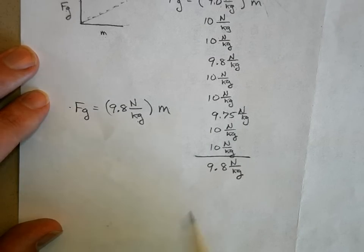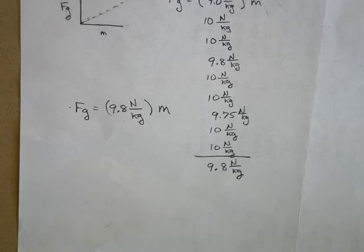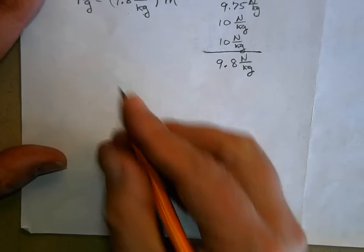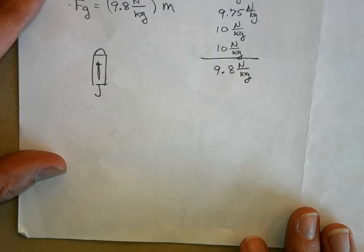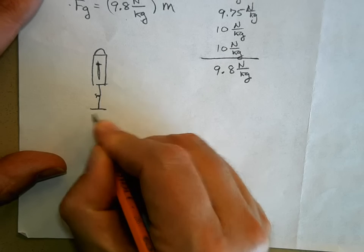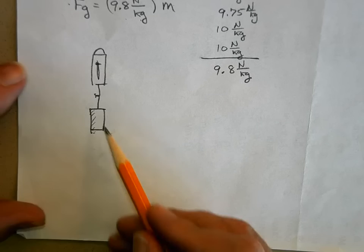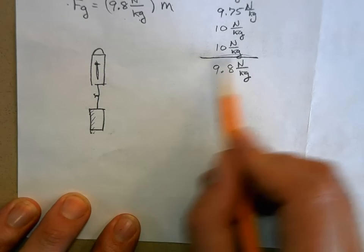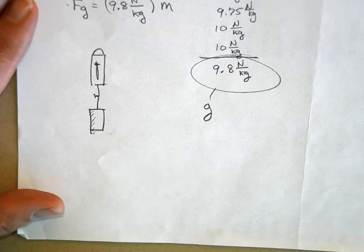We've seen this number 9.8 before — 9.8 meters per second squared — and that was for something in freefall. But when you have your spring scale holding a kilogram of mass, the object is just hanging there; it is not accelerating at 9.8 meters per second squared. So this 9.8 means something different here. We have a name for it — we call it G, and we use the letter G to represent it.